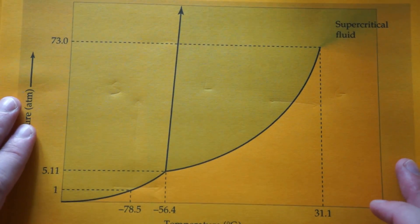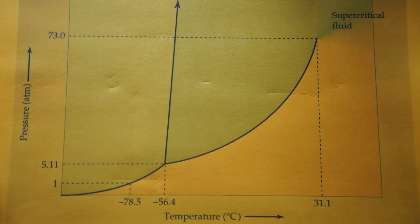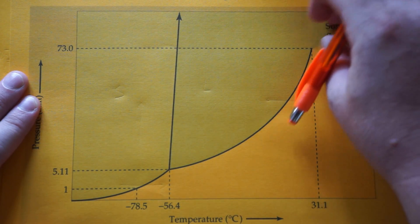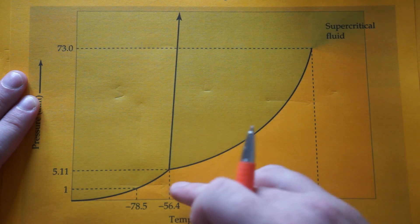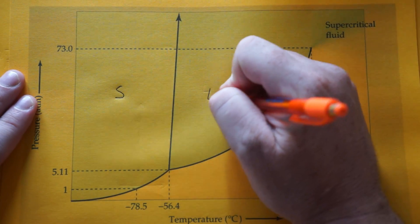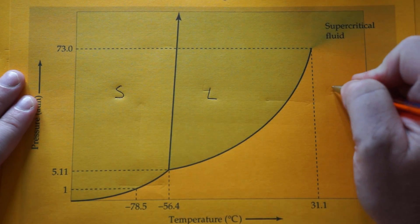Now we're going to look at carbon dioxide. Here's carbon dioxide's phase diagram. Here's your supercritical fluid. There's your critical point. The triple point is right here. Again, you go right across: solid, liquid, and gas.